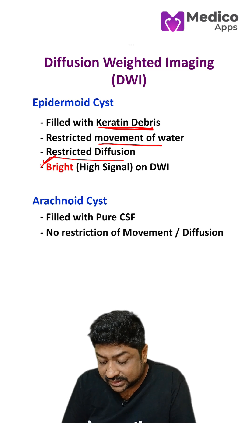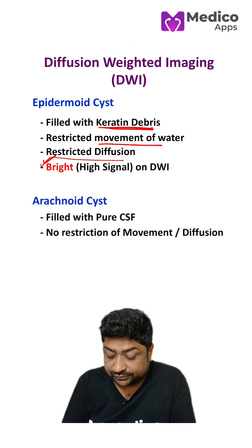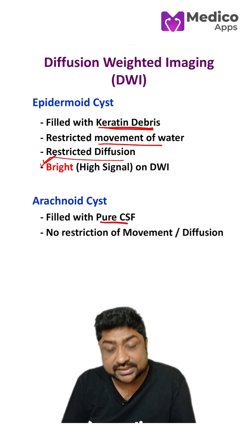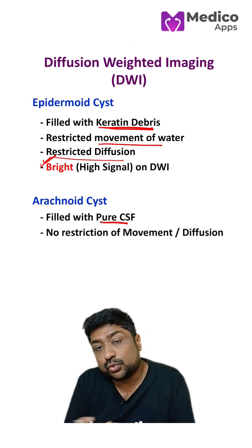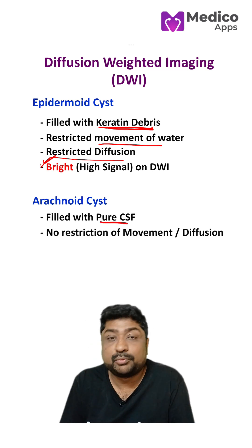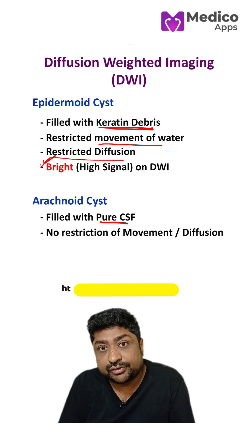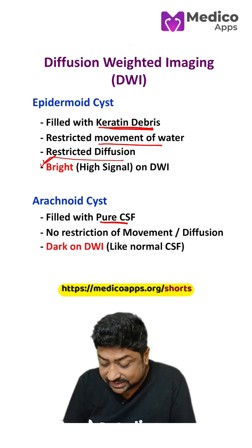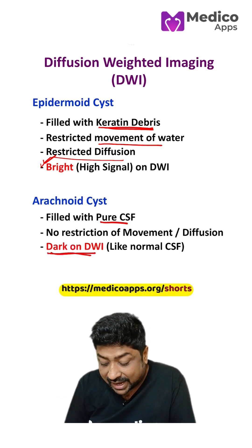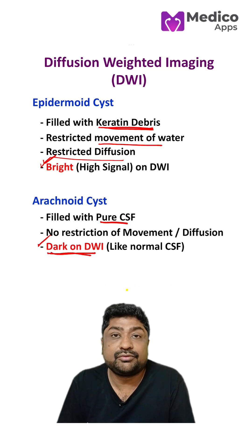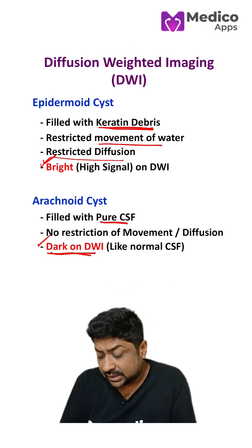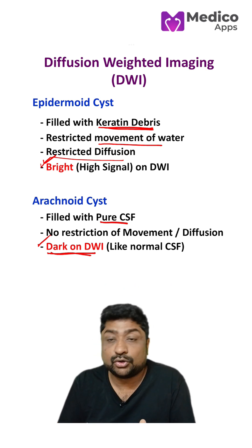If you contrast it with arachnoid cyst, we know that it is filled with pure CSF. So there is no restriction of diffusion, and this is why it will appear dark on diffusion weighted imaging, just like normal CSF.